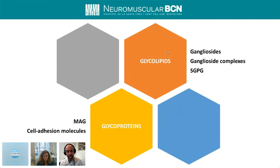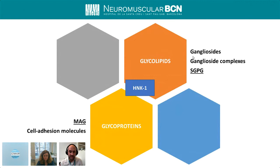An interesting feature of the antigens targeted by the immune response in these inflammatory neuropathies is that they are usually glycosylated. We can find glycolipids — gangliosides are the paradigmatic ones — but also glycosylated proteins like MAG or the nodal/paranodal molecules. Sometimes we can find glycans that are shared across glycolipids and glycoproteins, and these glycans, for example in anti-MAG neuropathies, have served as a model for antigen-specific therapy.